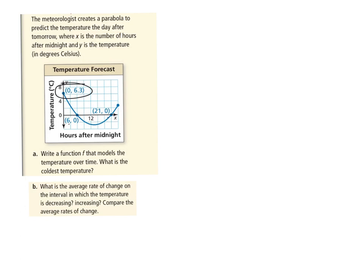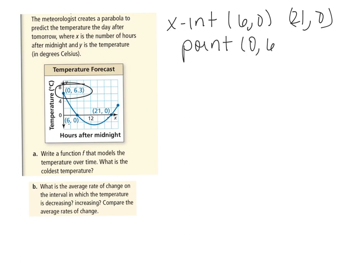What information am I given looking at this graph? I have a point that happens to be my y-intercept and two other points. Because we're given the x-intercepts, we can use intercept form. The x-intercepts are (6, 0) and (21, 0), and our point is (0, 6.3) — it happens to be our y-intercept, but it doesn't have to be.